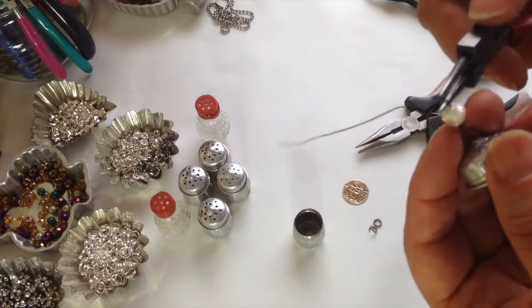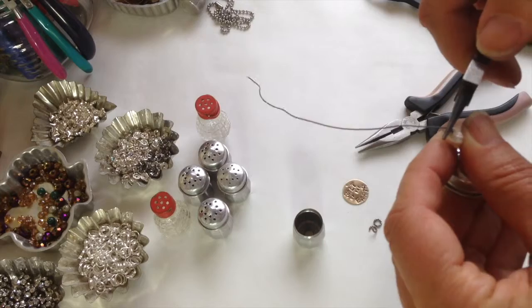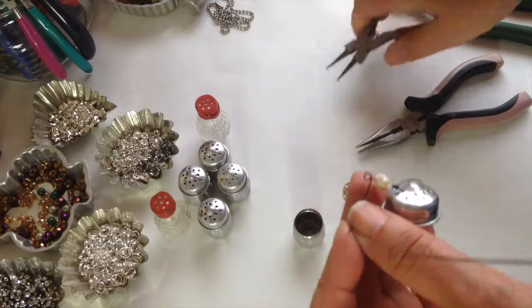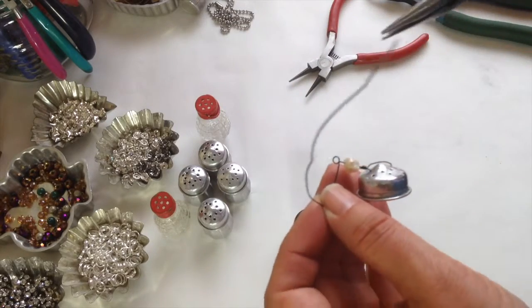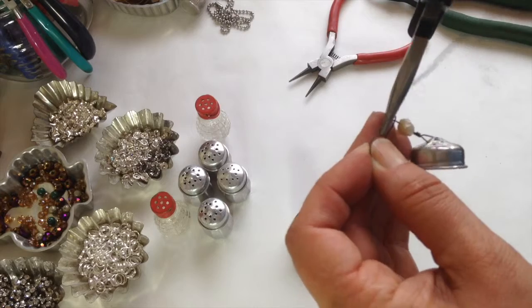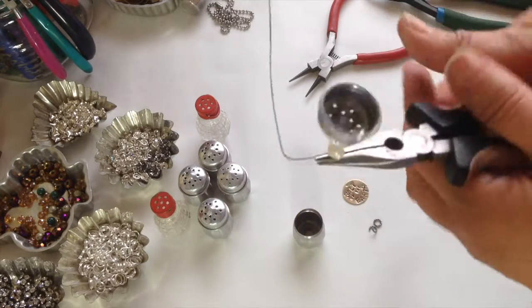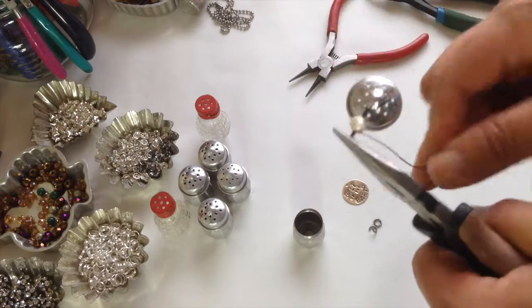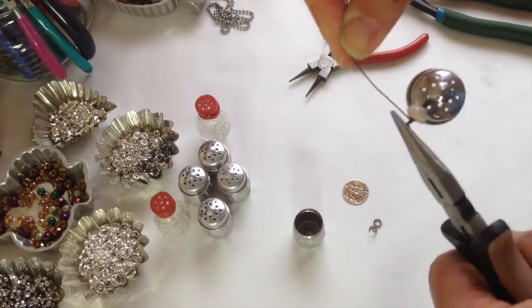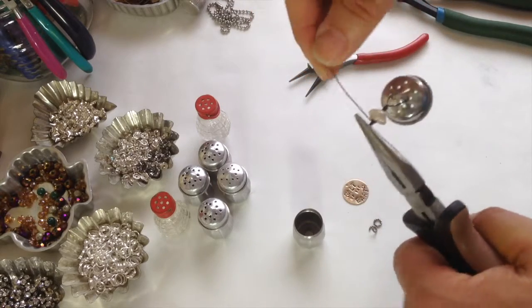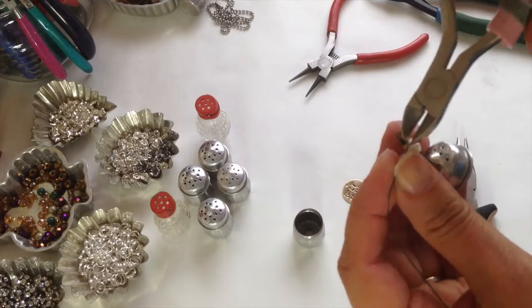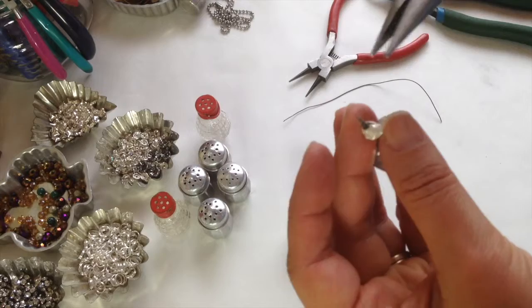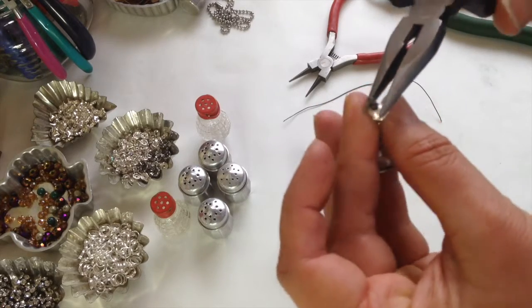And I take my round nose pliers, and I'm going to make a loop at the top. And this is just the basic loop, like if you were making bead dangles or something. And you can find lots of videos on that, specifically if you need practice on that. And then I hold the loop straight with my pliers, and I wrap the wire around again until the pearl is tight in between there. Like that. And then I'm going to trim it again. Squeeze it up tight again.